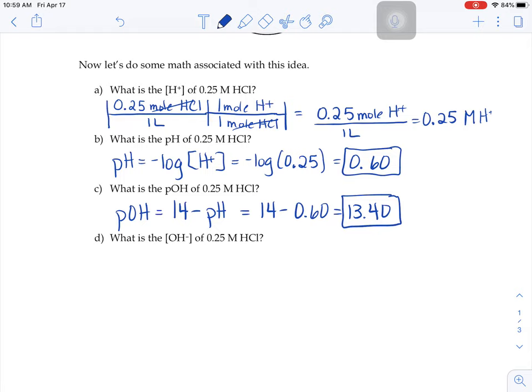The last question here, part D, what is the hydroxide ion concentration of 0.25 molar hydrochloric acid? Well, remember the p in pOH stands for power. It's telling you what the power of the hydroxide ion concentration is. When you want to know OH-, it's 1 times 10 to the negative pOH. The problem is, is that our pOH has a decimal in it, 13.40.